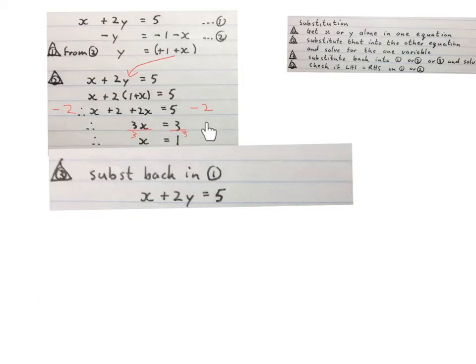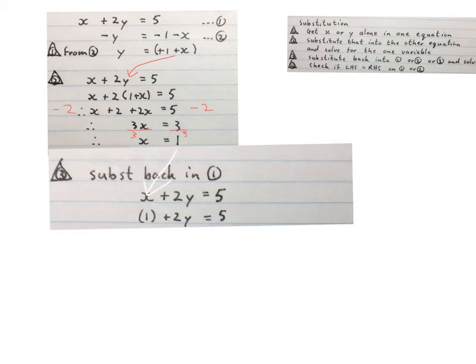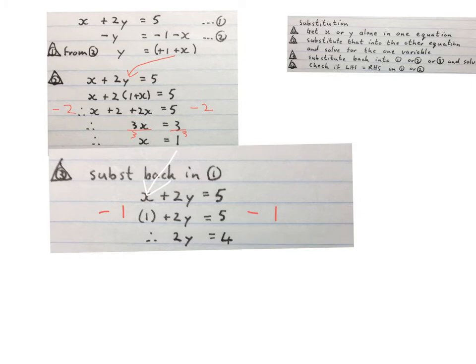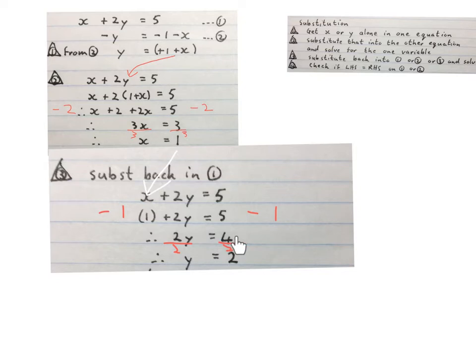Next, substitute X equals one back into either equation one or two. I decided to substitute it back into equation one, writing it down and replacing X with one. Then I solve for Y: minus one on both sides gives two Y equals four; divide by two on both sides and get Y equals two. The final answer is Y equals two and X equals one.